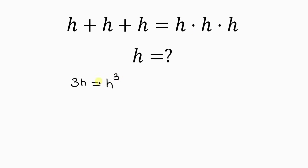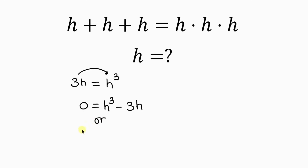I'm going to move 3H to the right-hand side, so that on the right I have H cubed, and as 3H crosses to the right it becomes minus 3H. What remains on the left will be 0. I'll prefer to write this as H cubed minus 3H equals 0.